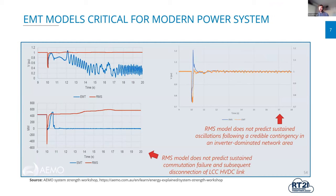To understand what all this new technology means, we need to model the system in much more detail than ever before. That's where EMT modelling really comes into form. The traditional RMS models used to understand transient stability phenomena are starting to fail in scenarios where there's a lot of inverter-based technology in one area. RMS models tend to overestimate how well things will go — for a fault, the RMS model may say 'you'll be fine' while the EMT model says 'you're in for a complete system collapse.' We've seen much greater congruence between EMT modelling results and in-field measurements, meaning the industry must increasingly shift to EMT models for transient stability analysis in inverter-dominated systems.